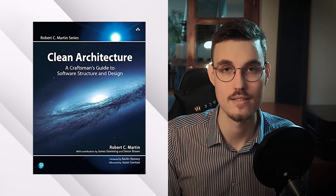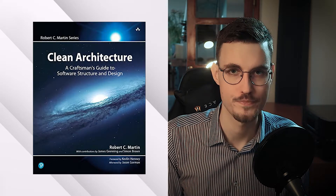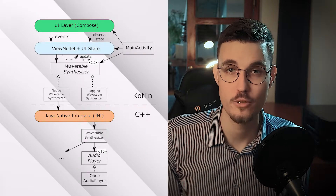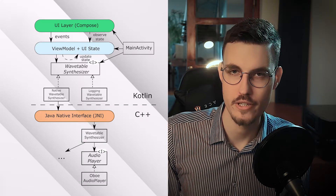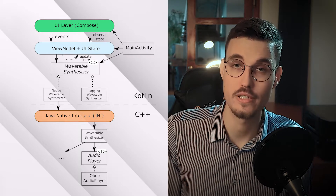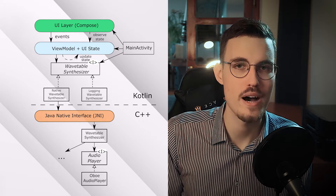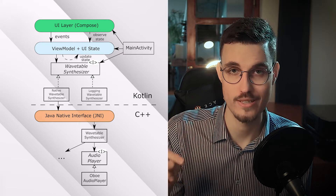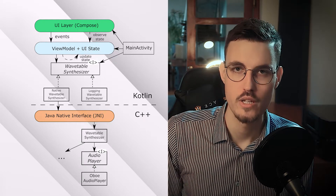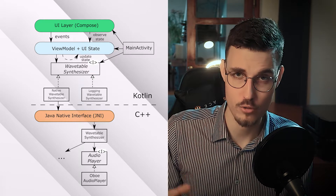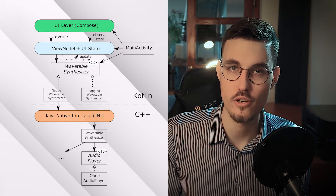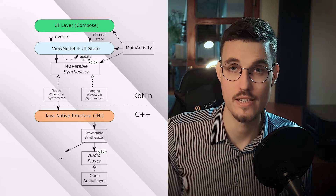Let's abstract out the details as much as possible. Here you can see the architecture of our app. At the very top we have the UI layer built in Jetpack Compose. The UI layer sends events to and observes the state of the ViewModel layer, which also holds the UI state. So whenever a user presses a button, the UI layer sends an event to the ViewModel, which passes the changes to the app core logic and updates the UI state — and this update is observed by the UI layer.